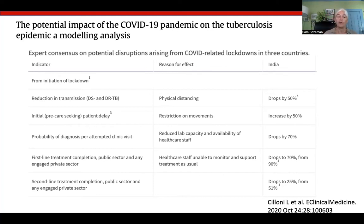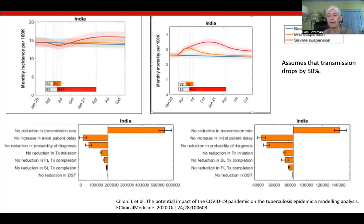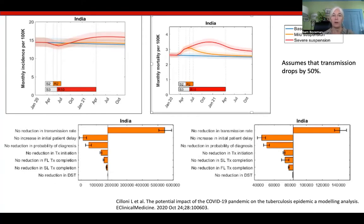The baseline scenario assumes that COVID affected all of these parameters. The study looked at levels in India, Kenya, and Ukraine, but for simplicity I'm only showing you the model results for India. The top two figures are the results of this model on incidence on the left and deaths on the right in the baseline setting. The authors also conducted a sensitivity analysis to see how different things would be if these assumptions were relaxed. What you see in the lower set of figures is that the single assumption with the most impact on the TB trajectory was the assumption that TB transmission had been reduced. Had it not been, incidence would have been far higher. But is it possible that in reality it might have actually been lower — in other words, that transmission was reduced by more than 50%?